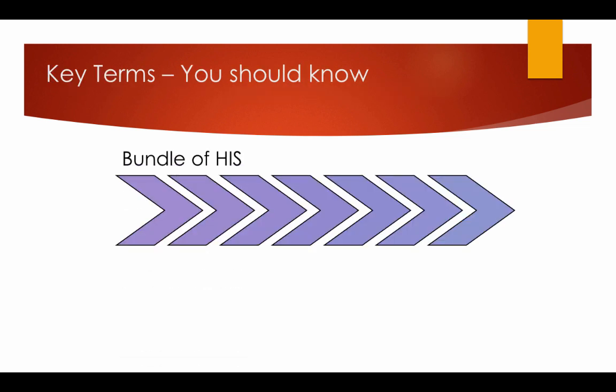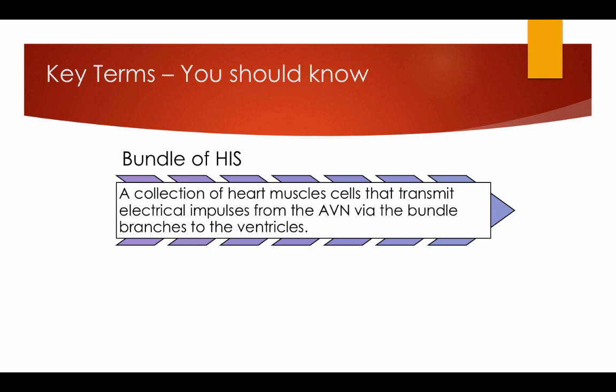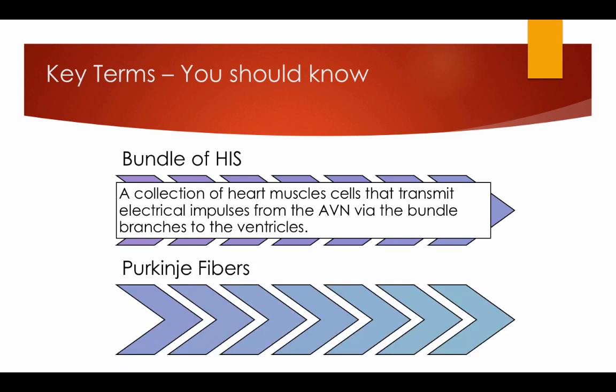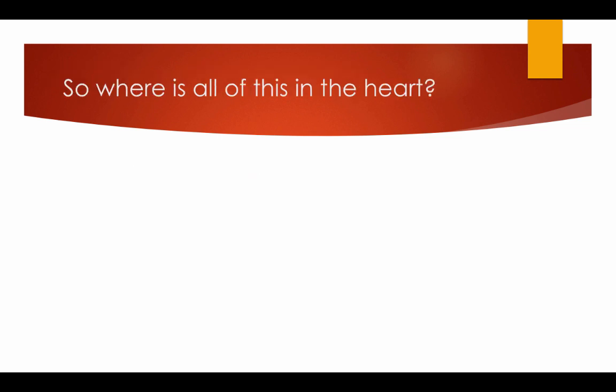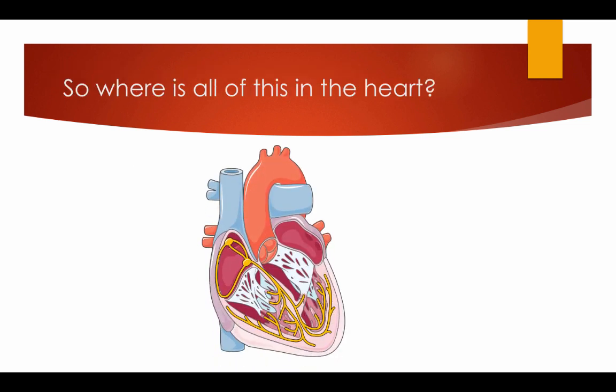Bundle of His: a collection of heart muscle cells that transmit electrical impulses from the AVN via the bundle branches to the ventricles. Purkinje fibres: muscle fibres that conduct impulses in the wall of the ventricles. So where is all this in the heart?